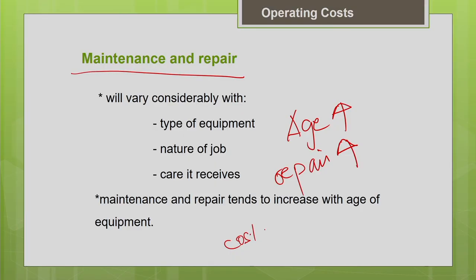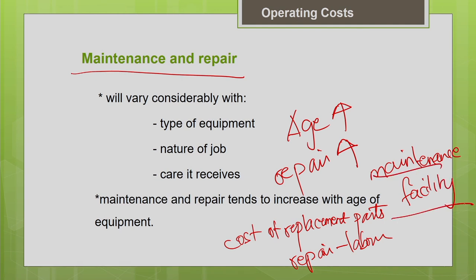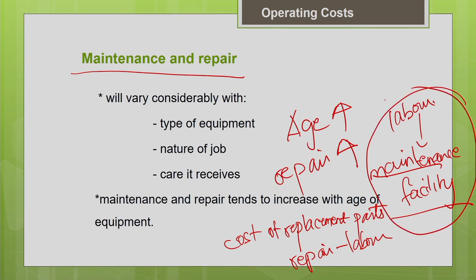The maintenance and repair cost includes the cost of replacement parts and the labour engaged for repair work. A contractor with a good equipment fleet will have a maintenance facility on site where he periodically maintains equipment, does check-ups, timely service, and cleaning — engaging labour for these operations. The cost of setting up this facility is also included. All these make up the maintenance and repair cost.